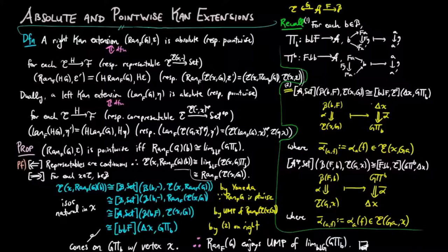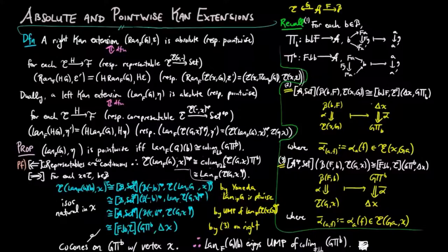To prove that the point-wise left Kan extension can be computed as a co-limit, we take the dual argument given here. Therefore, a left Kan extension of g along f is point-wise if and only if Lan(f,g)(b) is isomorphic to the co-limit of g∘π^b, which completes this proof.